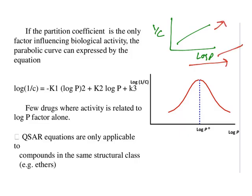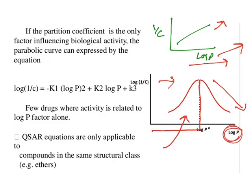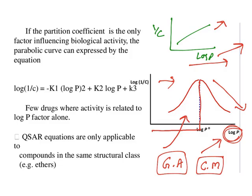Does that mean we keep increasing log P indefinitely? No. When you keep increasing log P, you get a parabola: activity increases to a certain extent, but after that it falls down, because completely lipophilic nature traps drug molecules in adipose tissue. Very few drug classes have activity completely based on log P, like general anesthetics, which need to dissolve in cell membranes (lipid bilayer). For the majority of drugs, a balance between hydrophilicity and lipophilicity is needed.